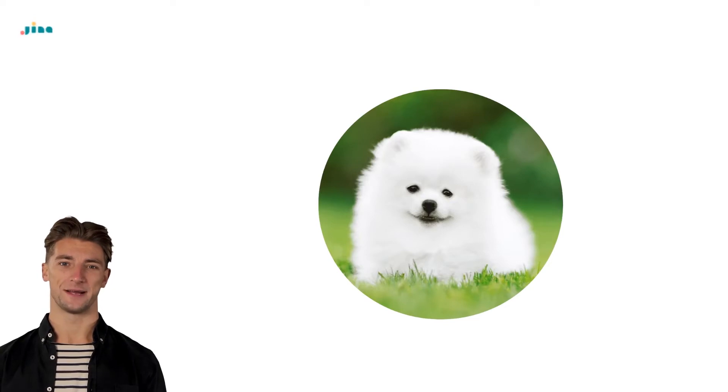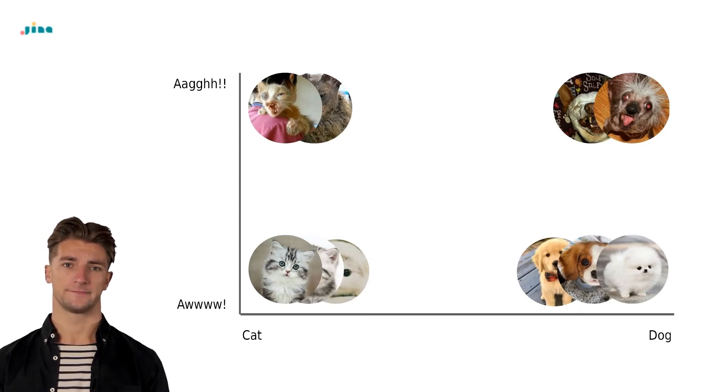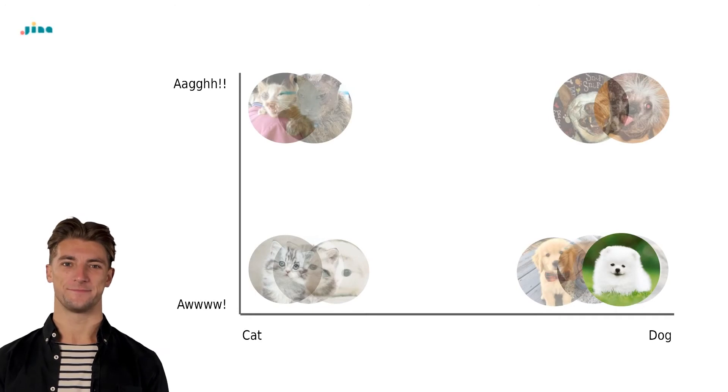This seems pretty simple, but that's because our brains do it automatically every day. Let's look at our graph again. If we were going to put our new puppy anywhere on this graph, where would we put them? Well, they're a puppy, and they're cute. So they go here in the index, right next to all the other cute pups.